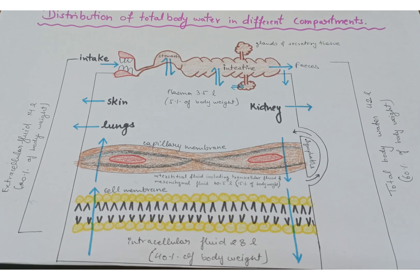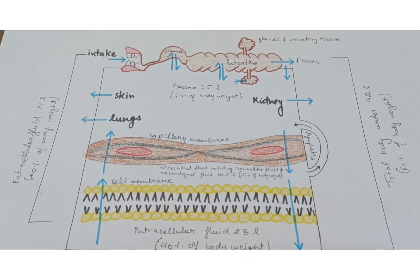The fourth component is mesenchymal tissue fluid. Mesenchymal tissues such as dense connective tissue, cartilage, and bones contain about 6 percent of body weight. Thus, interstitial fluid, transcellular fluid, and mesenchymal tissue fluid combinedly form 75 percent of the extracellular fluid. Dear students, go through the contents of the lecture; if you have any queries, you can write to me. In the next lecture, we will see the measurement of body fluid volumes. Thank you.